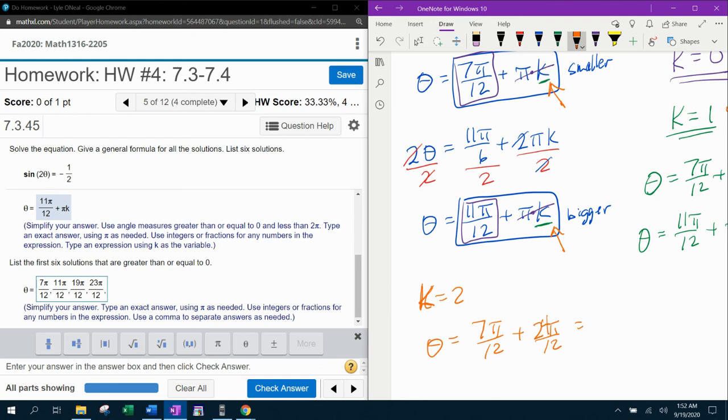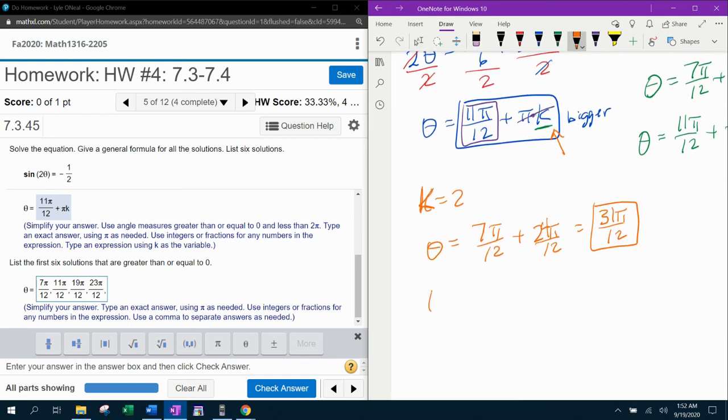24 plus 7 is going to be 31 over 12. 31 pi over 12. And then our other angle is going to be 11 pi over 12 plus 2 pi. So again, we're going to need a common denominator. 2 pi is the same as 24 pi over 12. 24 plus 11, that's going to be 35 pi over 12. And there's our next two angles.